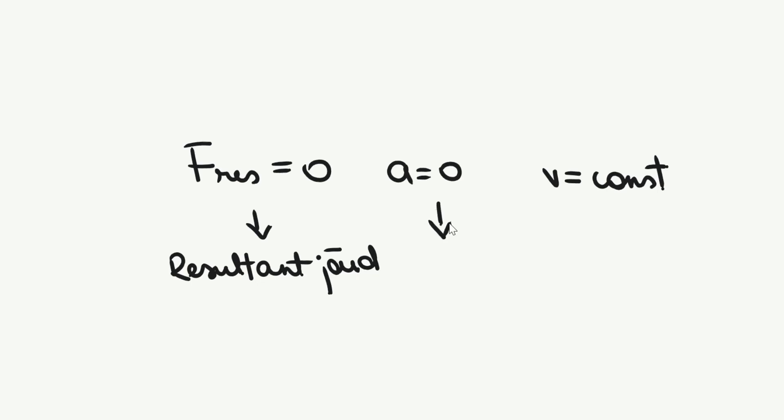Jõudude resultant ehk resultantjõud saab võrduda nulliga, kui kehale ei mõju üldse jõude või sellele mõjuvad jõud tasakaalustavad üksteist. Sellist nähtust, kus keha püüab oma liikumisoleukut säilitada, ehk keha mis liigub tahab liikumist säilitada ning keha mis on paigal tahab paigale jääda, nimetatakse inertsiks. Just sel põhjusel nimetatakse Newtoni esimest seadust ka inertsi seaduseks.